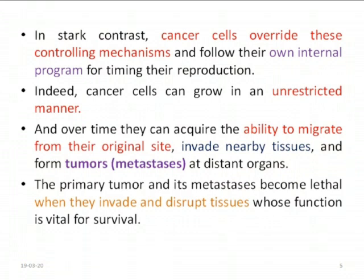In the case of cancer cells, the cancer cells override these controlling mechanisms — they are not following the body's instructions but instead follow their own internal program for timing their reproduction. Indeed, cancer cells can grow in an unrestricted manner. Over time, they can also acquire the ability to migrate from their original site.